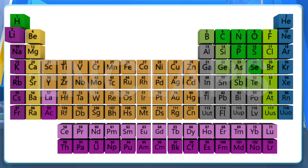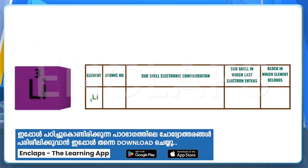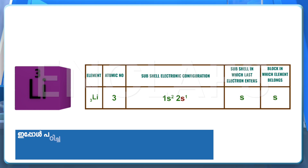Look at this table. First we are going to find out the block of lithium. Lithium has its atomic number 3, so its subshell electronic configuration can be written as 1s2, 2s1. Here you can see that in the case of lithium, the last electron enters the S subshell. That means lithium belongs to S block in the periodic table.